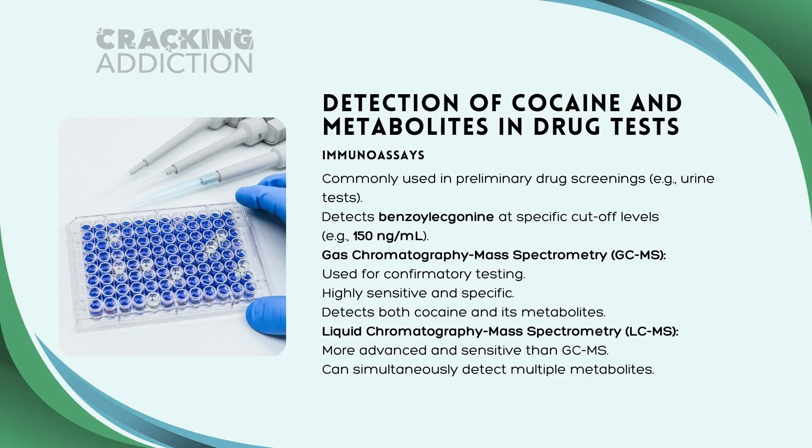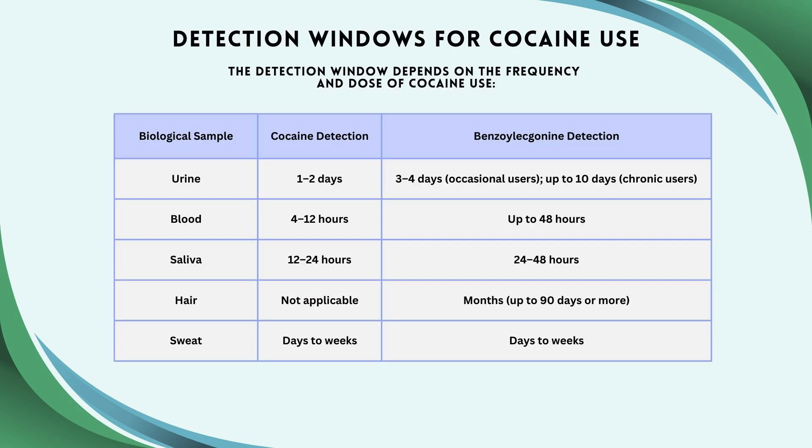In terms of detection methods: the immunoassay is the easier test to perform and is commonly used as a preliminary drug screen in urine drug tests. It detects benzoylecgonine at a specific cutoff level — for example, about 150 nanograms per milliliter of urine. GCMS or LCMS is used for confirmatory testing; it is highly sensitive and specific and detects both cocaine and its metabolites.